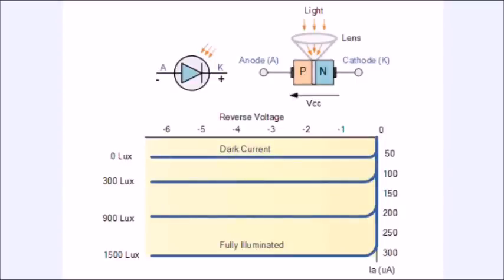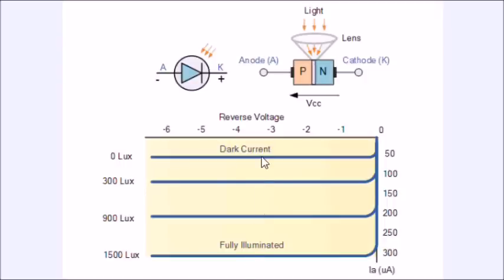A photodiode is simply a PN junction, and when reverse biased it creates a depletion region. When light enters the depletion region it generates charges that form a leakage current. Dark current is the small amount of current that flows even when there's no light present, and as light intensity increases, the dark current increases. This reverse bias leakage current is proportional to light intensity.